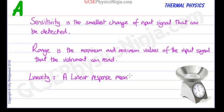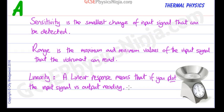means that if you plot the input signal versus the output signal or the output reading, then you will see a straight line. And that's probably the easiest way to remember it.